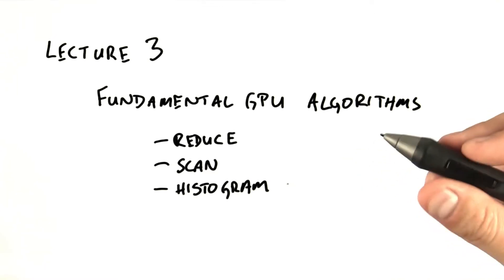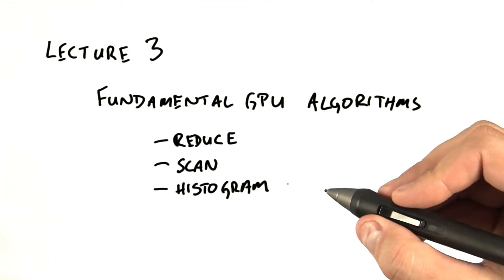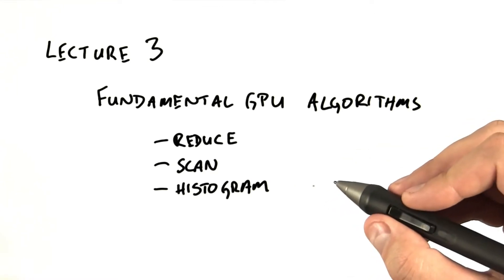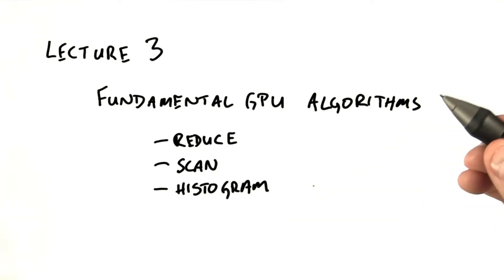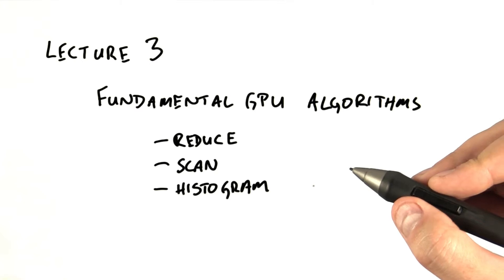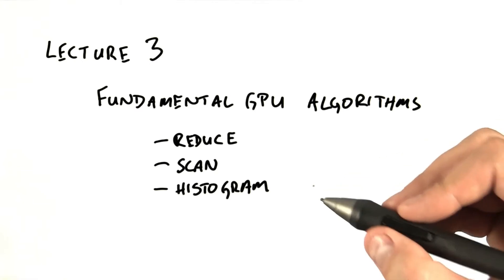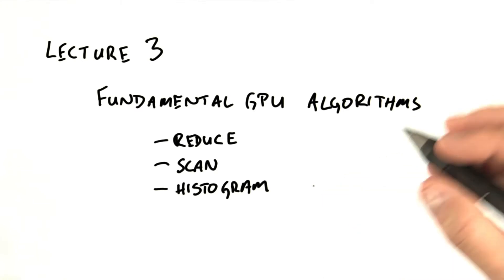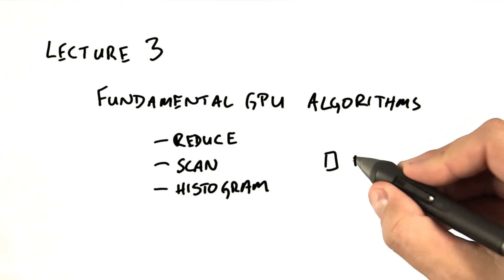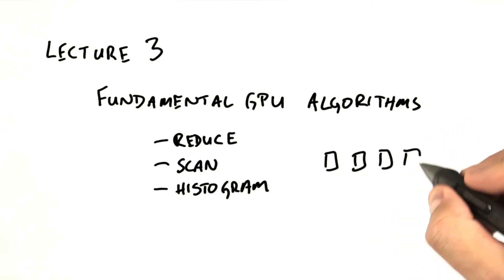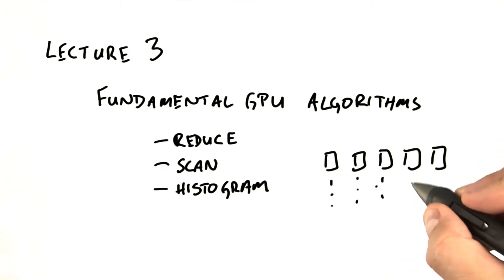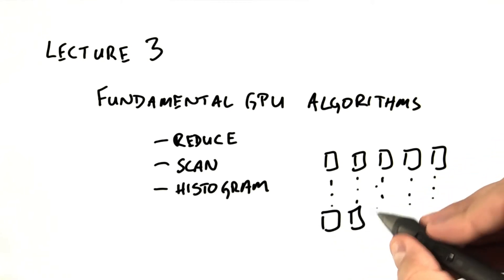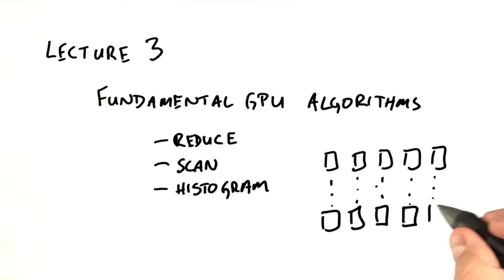GPU computing is based on exploiting concurrency in a workload. Expressing that concurrency in a language like CUDA allows parallel implementations on the GPU that can take advantage of hundreds of simultaneous computations. The GPU is well-suited to communication patterns that are completely independent, like the map operation, where each computational element computes its output in parallel and completely separately without any communication whatsoever.